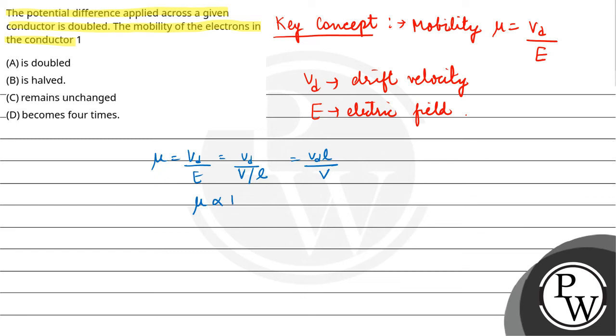Mu is inversely proportional to V. If V gets doubled, Mu gets halved.